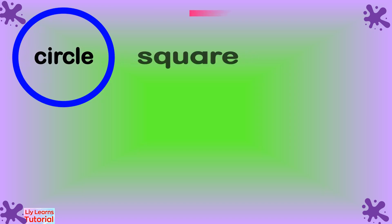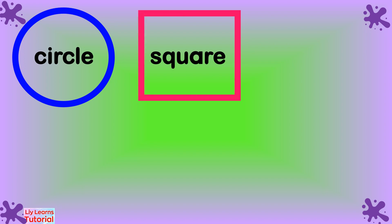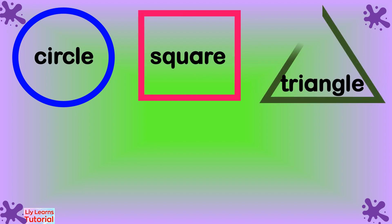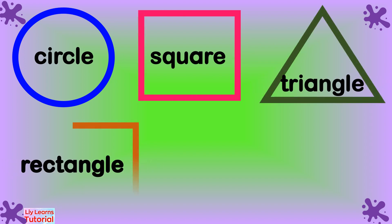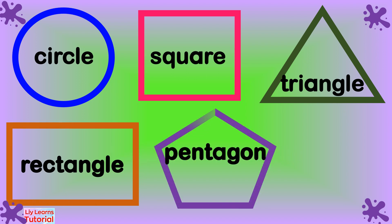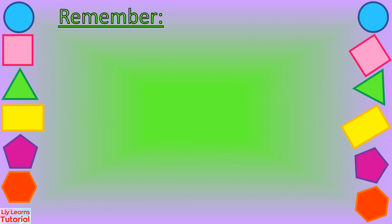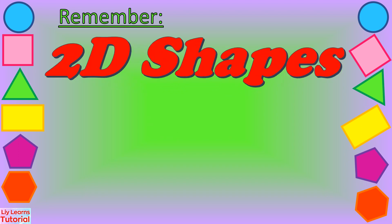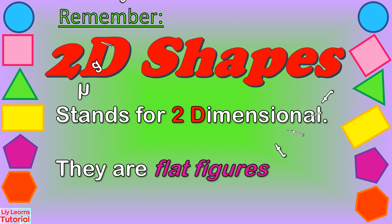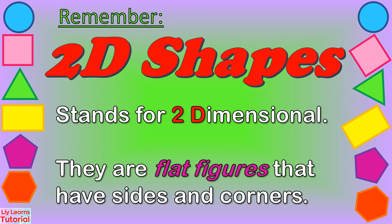Let's look at the different 2D shapes one more time. Always keep in mind that 2D shapes are flat figures that have sides and corners.